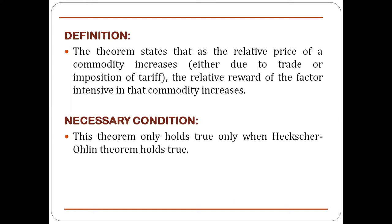As an example, suppose there are two nations that start trading with each other. Due to trading, the relative price of commodity X increases, and commodity X is labor-intensive — it requires more labor to produce. When both nations start trading and the price of commodity X increases, the factor intensive in its production, that is labor, sees its relative reward or relative share in total income increase.